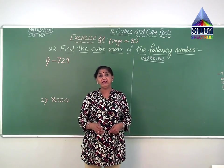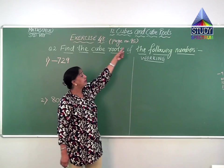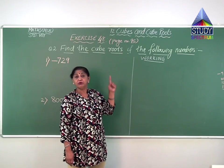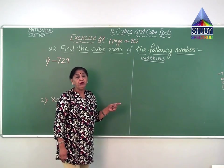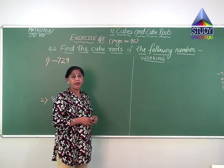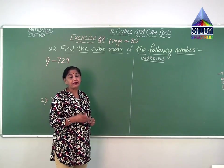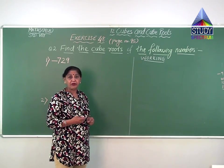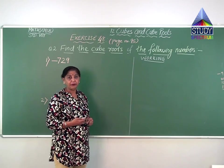Now children, as we were solving exercise 48 on page 95, we will now do question number 2. In question number 2, they have asked: find the cube roots of the following numbers. While explaining earlier, I showed you the method — the prime factorization method — by which you can find the cube root.